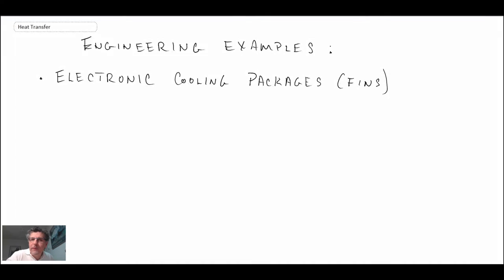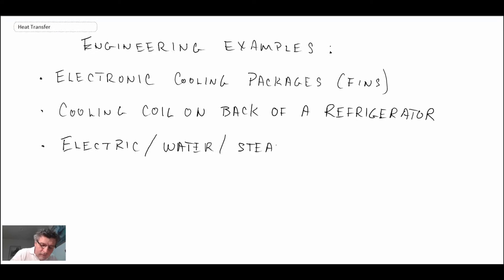We're going to begin by looking at some common engineering examples where you could have free or natural convection. The first one that we'll look at are electronic cooling packages or fins. Then we will look at natural convection on the back of refrigeration systems or refrigerators. And the last thing that we will take a look at is heating systems. These could either be electric where you have dual heating, it could be hot water circulating, or you could have steam.